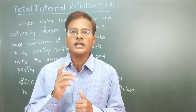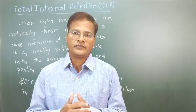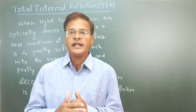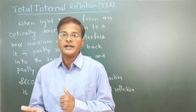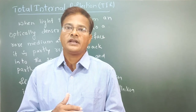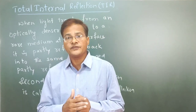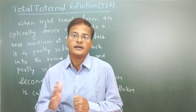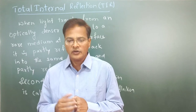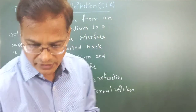Total internal reflection means: when a ray travels from a denser medium to a rarer medium, the ray is partly reflected and partly refracted. It is partly reflected and partly refracted. This phenomenon we are going to call total internal reflection. We will understand the definition clearly, and how exactly it travels we will understand by drawing a ray diagram.